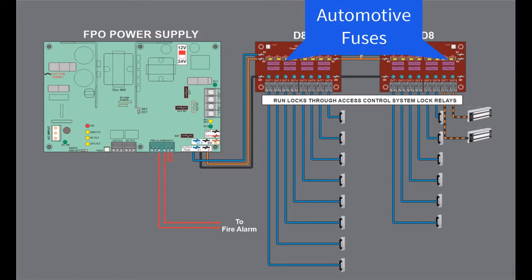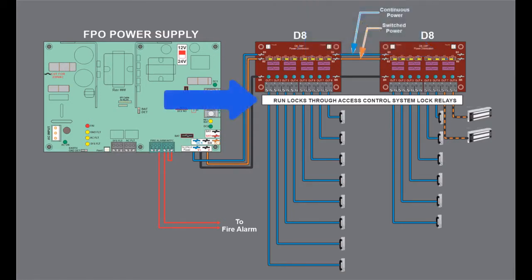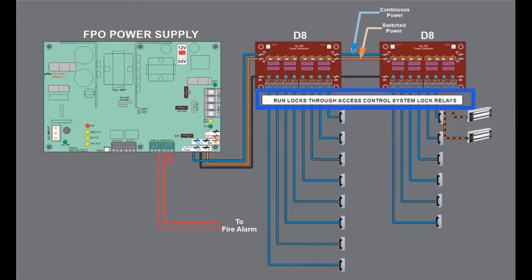Each strike now has a fuse in series with it and can be controlled by the access system door relays. Each mag lock also has a fuse in series with it and can be controlled by the access system, but will drop out when the fire alarm interface of the FPO is activated by the fire alarm panel.